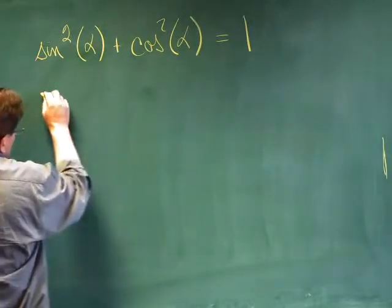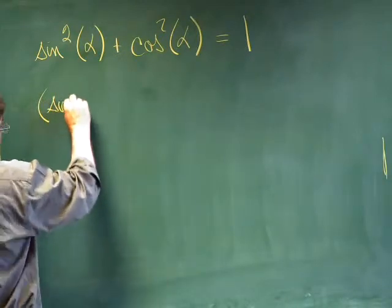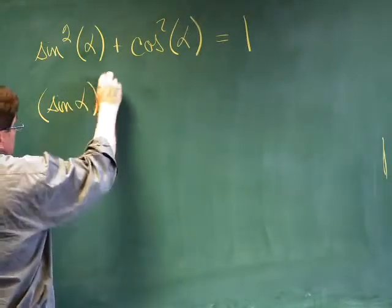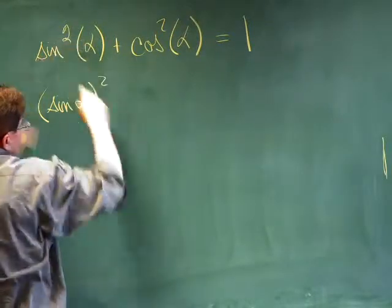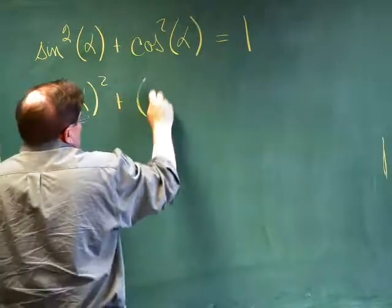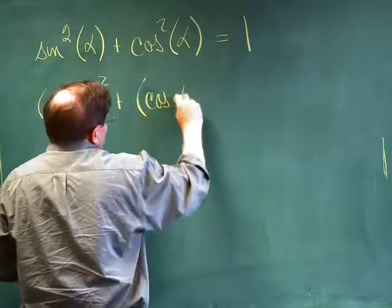We know what this means is the sine of alpha squared. The order of operations here is that you do the sine first and then you square that result. And this is the cosine of alpha squared.